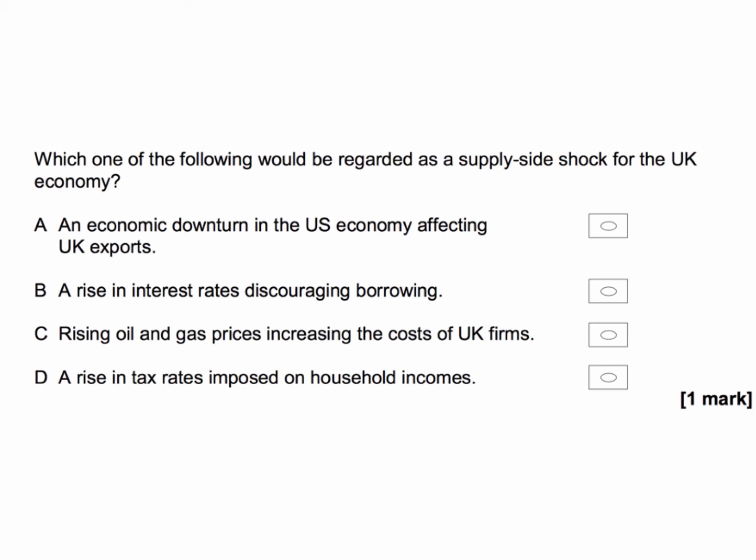Let's work through the answers. What about an economic downturn in the United States affecting UK exports? That's not right — that's more likely to be a demand side shock: C plus I plus G plus X. What about a rise in interest rates discouraging borrowing? Interest rates are a cost to a firm, but not a supply cost, and again a rise in interest rates is more likely to be a demand side shock. So B is wrong.